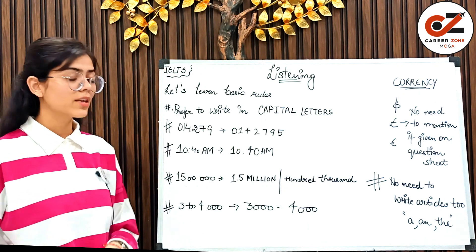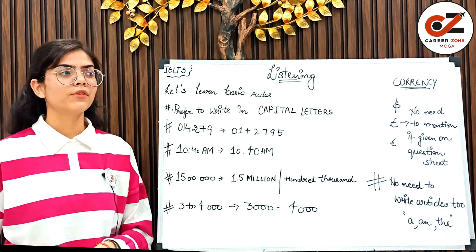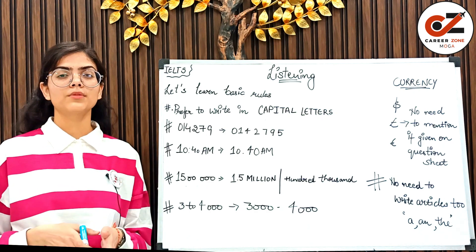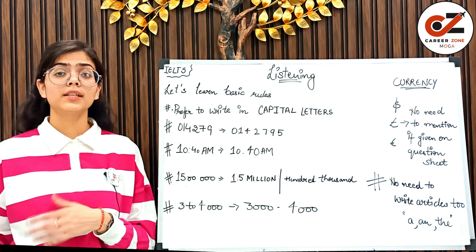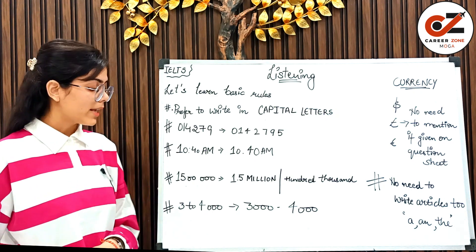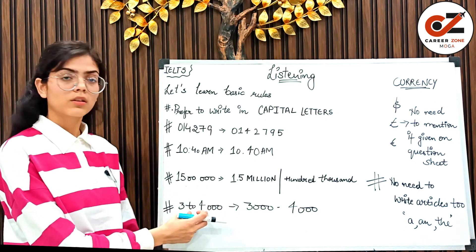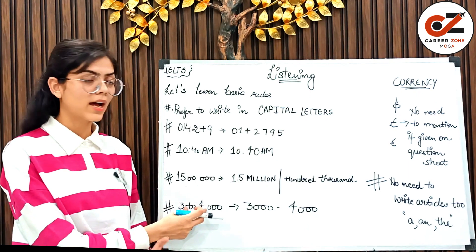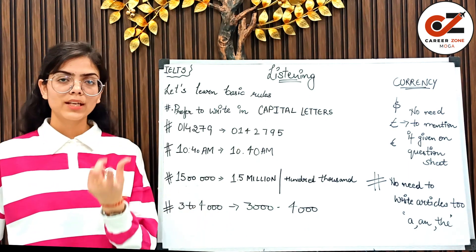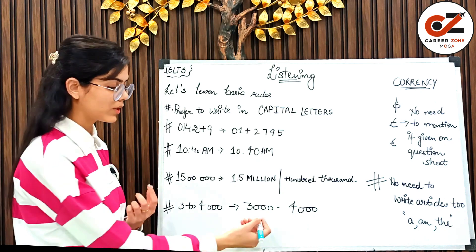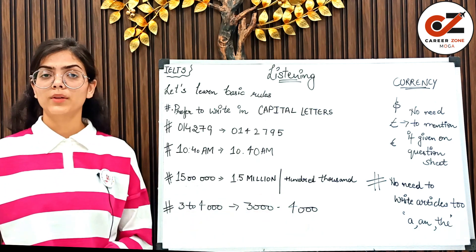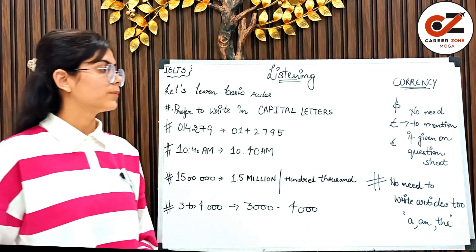My next tip is about number ranges. For example, if they say 'this process lasts for 3,000 to 4,000 years,' you will not write the answer as '3 to 4,000.' You will write your answer as '3000-4000.'